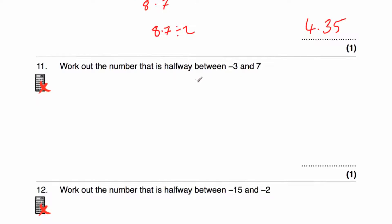Question eleven says: work out the number that's halfway between negative 3 and 7. So negative 3 plus 7: if we added 3 to negative 3 we get to 0, and we've then got 4 left. So negative 3 plus 7 is 4. Now we divide by 2: 4 divided by 2 is equal to 2.